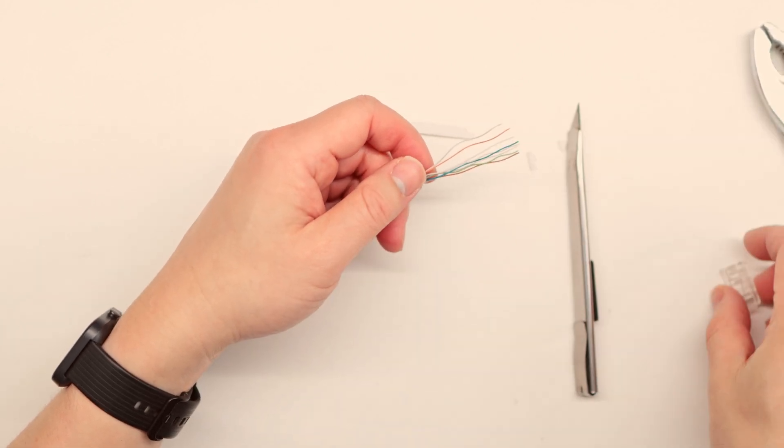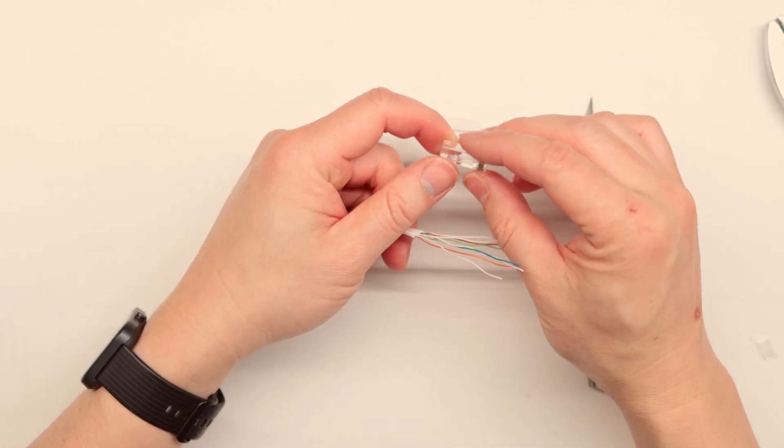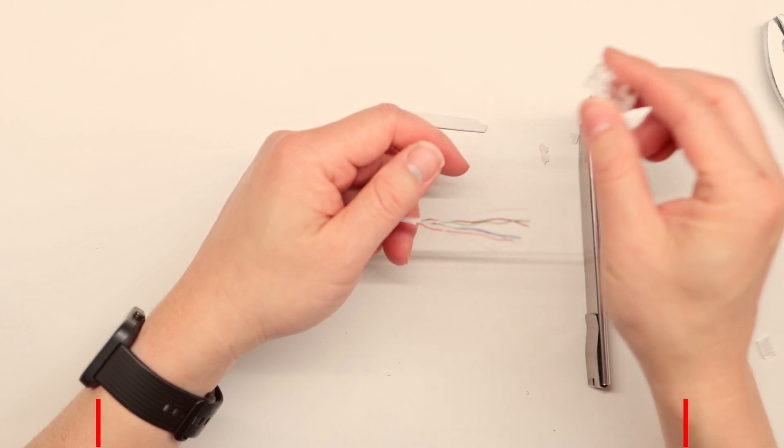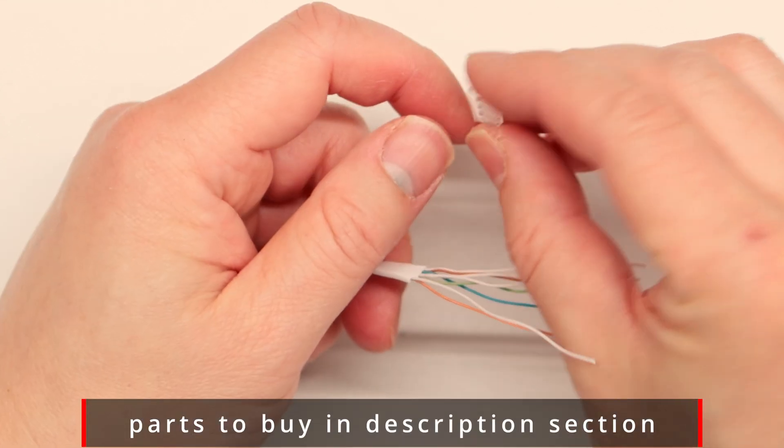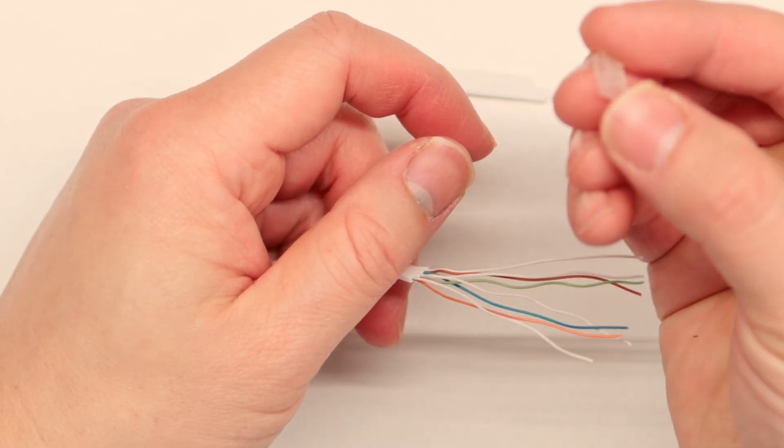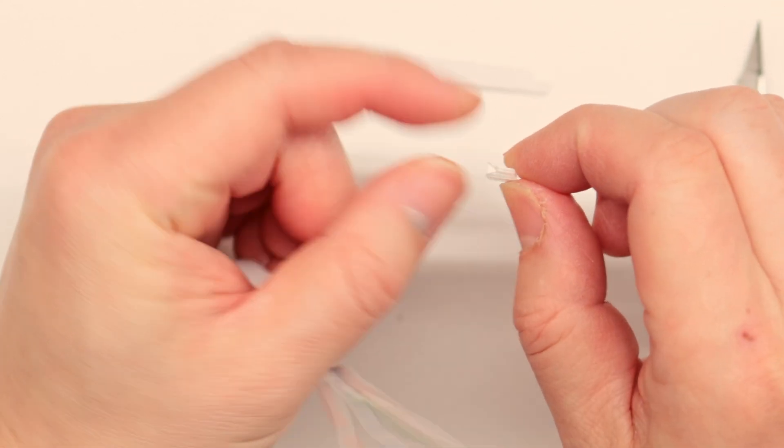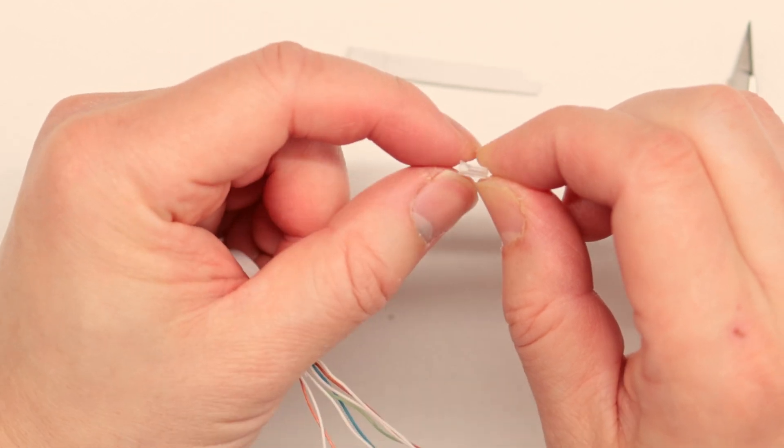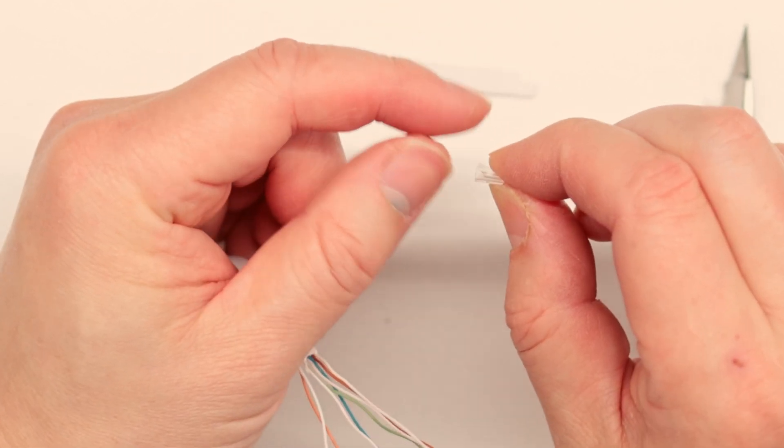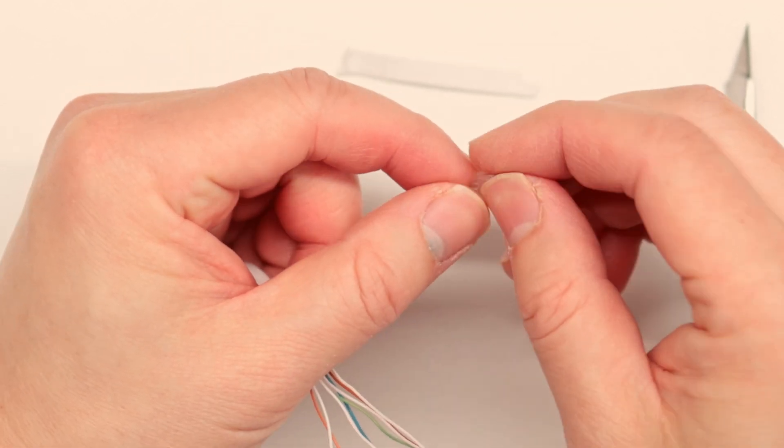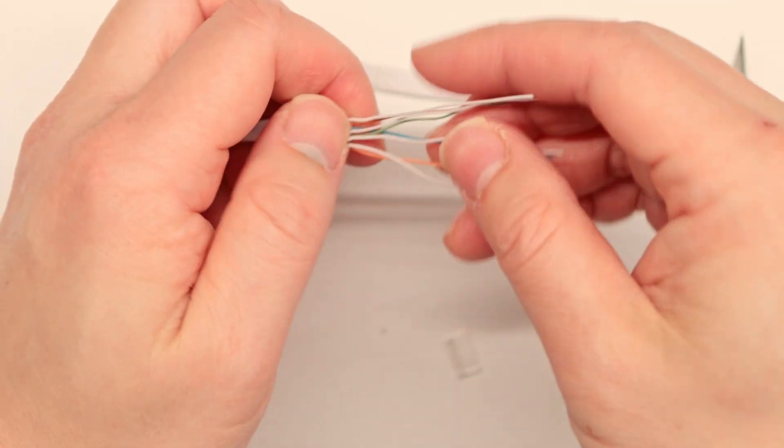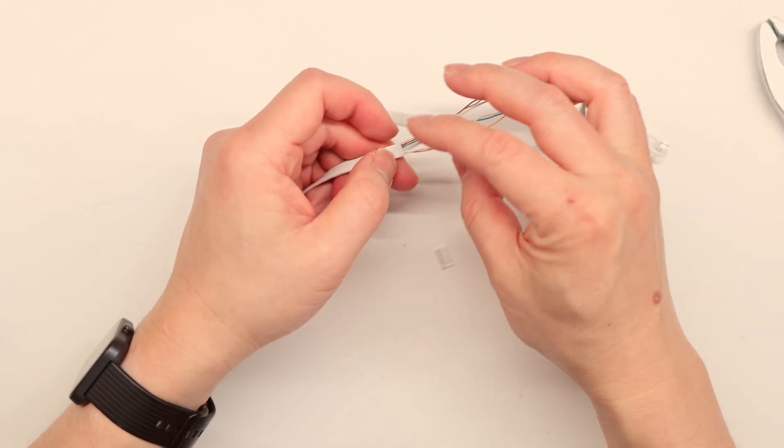We're going to use a standard Cat5 terminating block. This one has the loading bar, as you can see. On the bottom side, it's flat. And on the top side, right here, it's sticking out. You'll want that sticking out part to be on top. Save it for later. For now, we need to do the order.